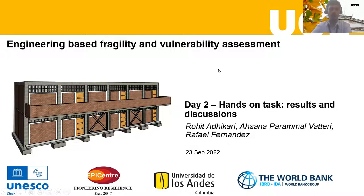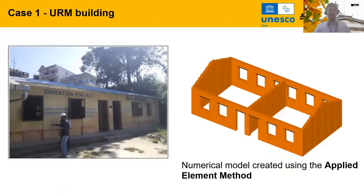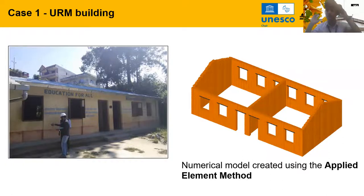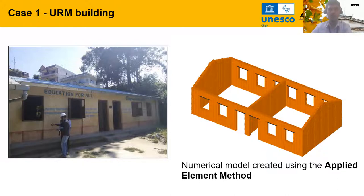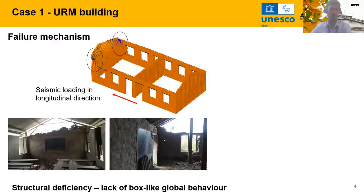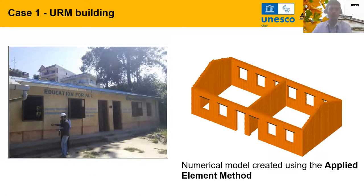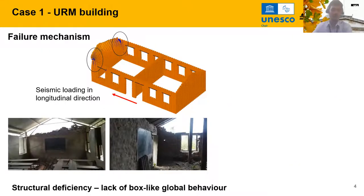I will first start with the Unreinforced Masonry (URM) case study. We consider this building and asked you to analyze the out-of-plane walls only. The reason is this building does not have a global box-like behavior — there are no lintel bands and no roof band. From the pushover analysis done in the long direction, you can see the out-of-plane wall is the most vulnerable element. Similarly, loading in the transverse shorter direction again reveals the vulnerability of out-of-plane walls.